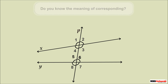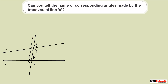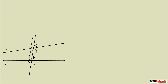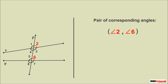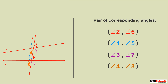The word 'corresponding' means similar in position. Angles 2 and 6 both lie on the same side and at the same position relative to the transversal, so they are a pair of corresponding angles. In corresponding angle pairs, one angle lies in the interior and the other in the exterior of the two straight lines. Other pairs of corresponding angles are: 1 and 5, 3 and 7, and 4 and 8.